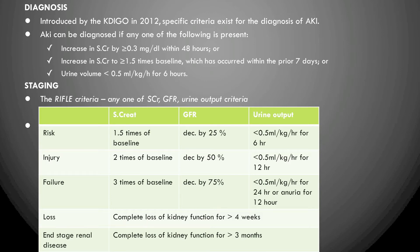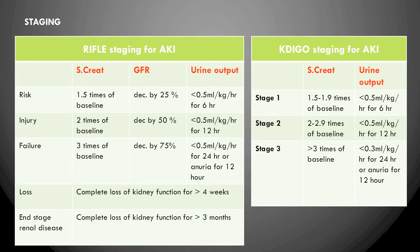The Failure stage: creatinine greater than three times baseline, GFR decreased by 75%, and urine output less than or equal to 0.5 mL/kg/hour for 24 hours, or anuria with less than 500 mL in 24 hours for 12 hours. Loss: complete loss of kidney function requiring hemodialysis for greater than four weeks. End-stage renal disease: complete loss persisting for more than three months, requiring active hemodialysis approximately twice a week.